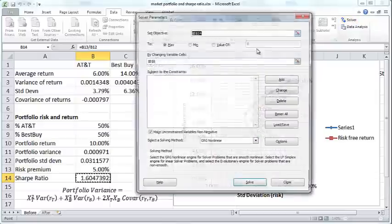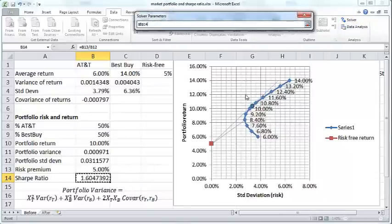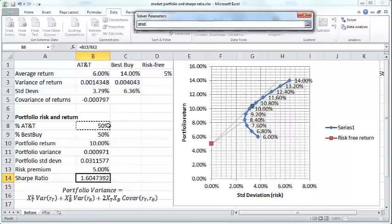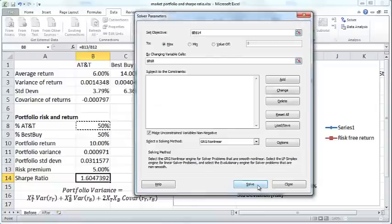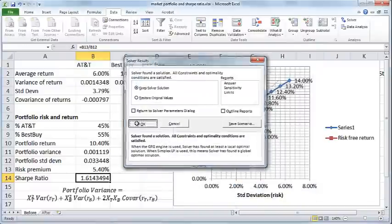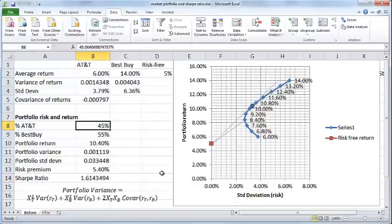So go to data and solver. And now what I'm going to do is set an objective. The objective is the Sharpe ratio. And I want to maximize that objective by changing the proportion of AT&T stock in my portfolio. So if I do that and click Solve, then and click OK to keep the solver solution, then I get a Sharpe ratio of 1.6 when I have 45% AT&T and 55% Best Buy.